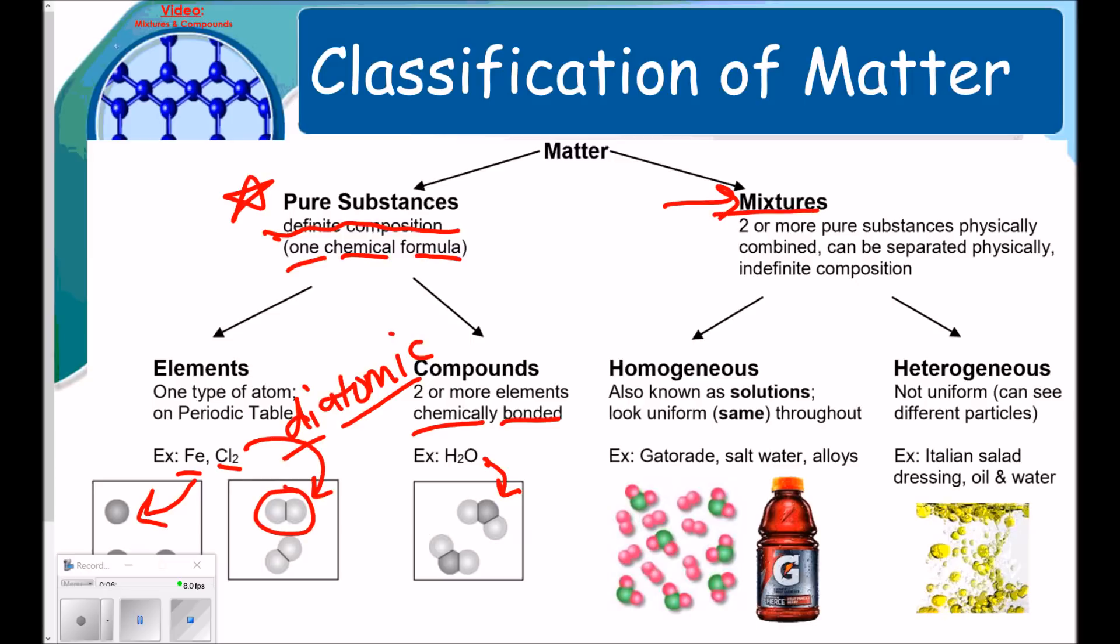We also have mixtures, which are two or more pure substances that are physically combined. They can be separated physically, and they have an indefinite composition, meaning that their composition may vary by proportion. There's two types. There's homogeneous and heterogeneous.